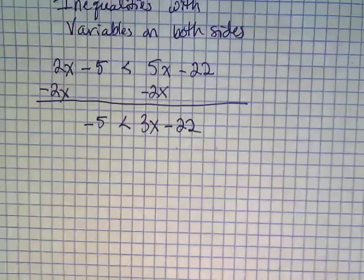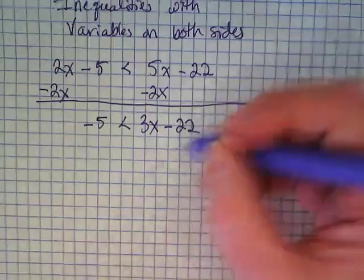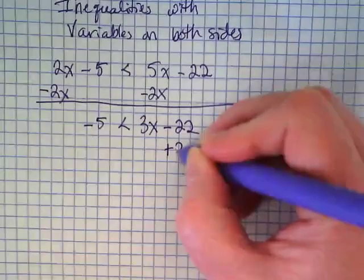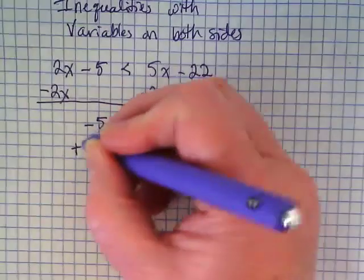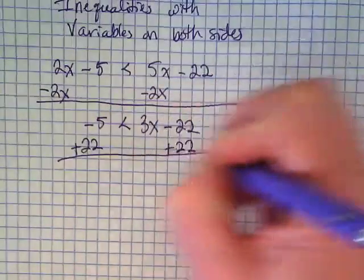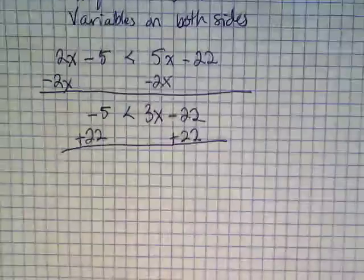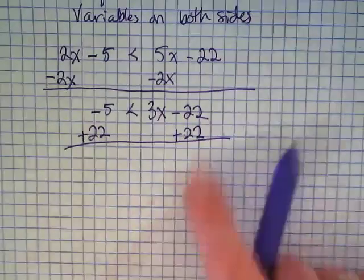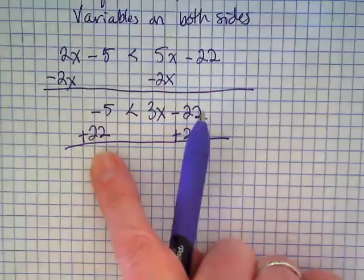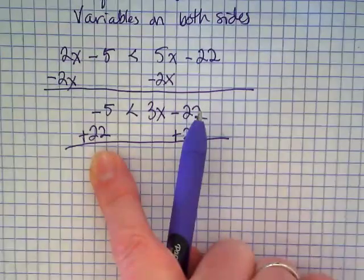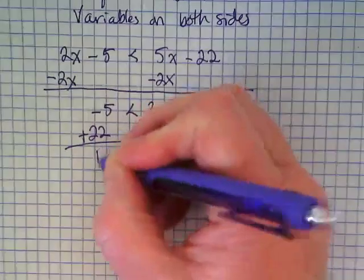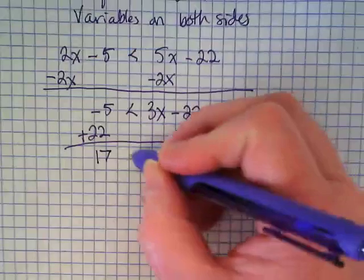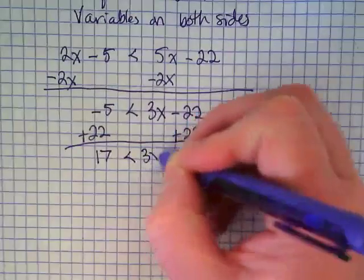And now we're going to deal with the constants. We're going to add the 22 because it's with the term that has the variable. Our goal is to get that variable by itself. Negative 22 plus 22 is 0. Negative 5 plus 22 is what? 17.